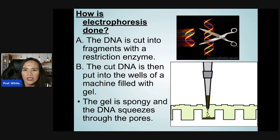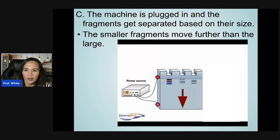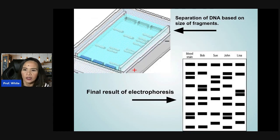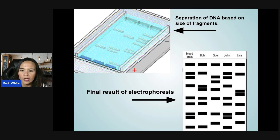The machine is plugged in and the DNA fragments get separated based on their size — smaller fragments move further than the larger ones. As seen in the animation, the separation of DNA produces a pattern of bands.